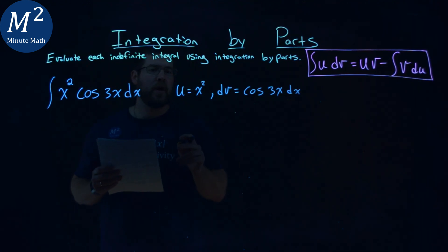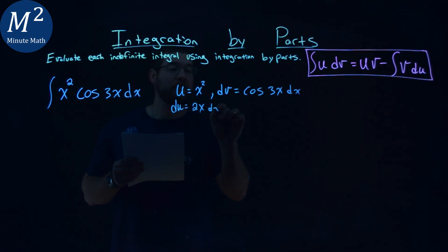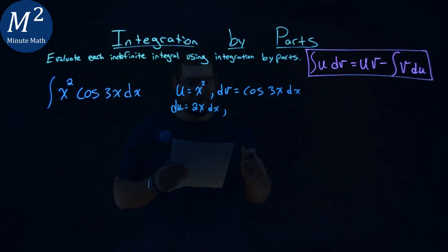The derivative of u, so du is 2x dx. The integral of dv, so the integral of cosine of 3x, is 1 third sine of 3x.